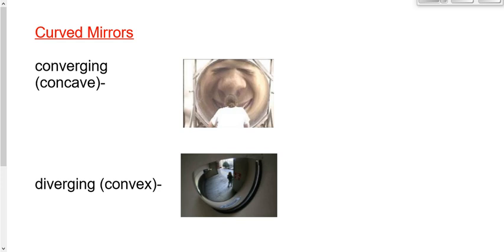I want you to see if you notice anything that jumps out as being a little bit confusing or different. Things are switched. A converging mirror is concave; a converging lens was convex. A diverging mirror is convex; a diverging lens was concave.